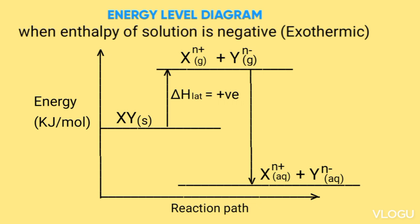Then the enthalpy of solution is negative, so the arrow goes down from XY solid down to X⁺ (aqueous) plus Y⁻ (aqueous).